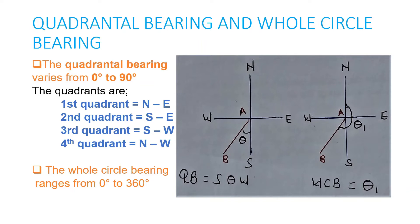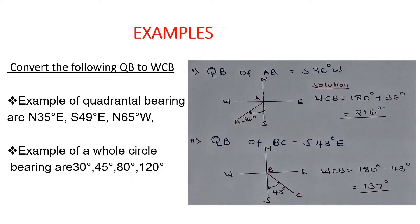The quadrants in the Quadrantal Bearing are: Northeast, Southeast, Southwest, and Northwest — there are four quadrants. The Quadrantal Bearing varies from 0 to 90 degrees, whereas the Whole Circle Bearing varies from 0 to 360 degrees.